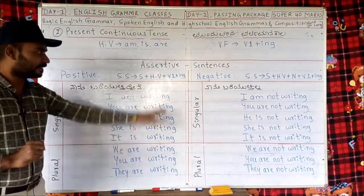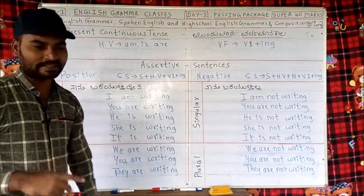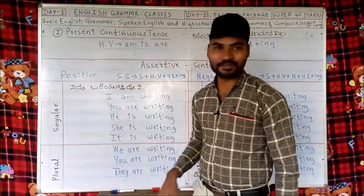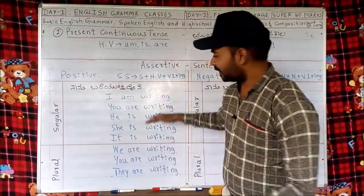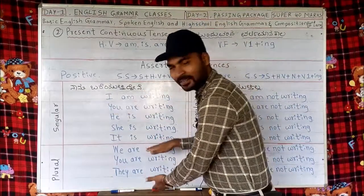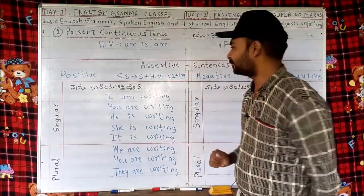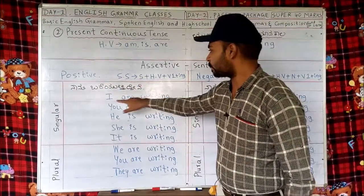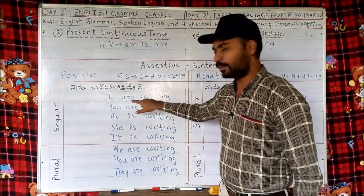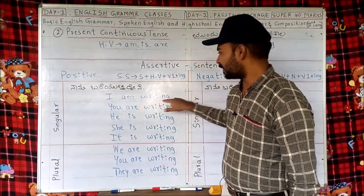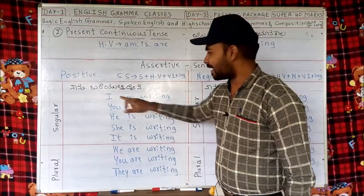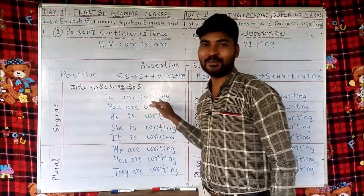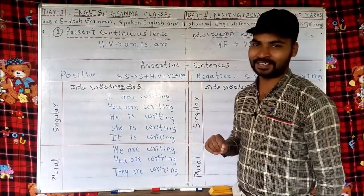The sentences we are studying here are assertive sentences. Assertive sentences are simple sentences. Let's have a look at positive sentences right now. This part is singular and this part is plural. Positive sentence structure: subject, helping verb, then V1 plus ING. This is the structure of the sentence.